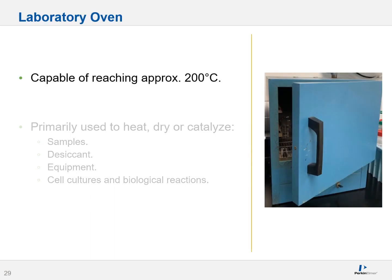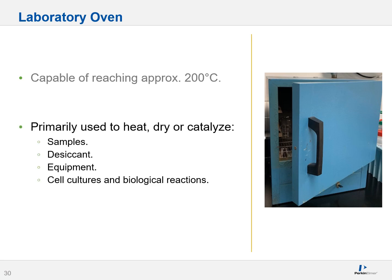You'll also encounter laboratory ovens. Generally, these devices are capable of reaching about 200 degrees Celsius. They're primarily used to heat, dry, or catalyze reactions. You'll see them used to heat or dry samples, to prepare desiccant, to clean out equipment after washing with water, or to encourage cell culture or other biological reactions. It's a good device — every lab should really consider having one.